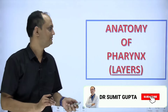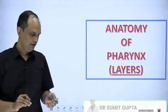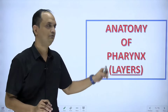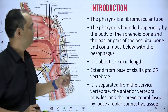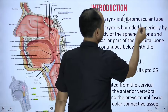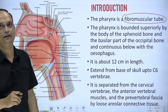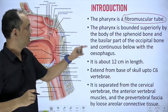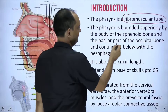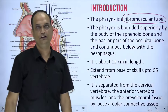Hello students. Today we will start with the anatomy of the pharynx. In today's lecture we will discuss about the layers of the pharynx. The pharynx is a fibromuscular tube, made up of muscles with a fibrous layer also. The pharynx is bounded superiorly by the body of the sphenoid and basilar part of the occipital bone, and below it will continue with the esophagus.